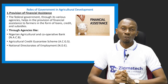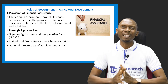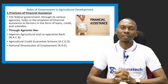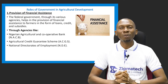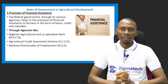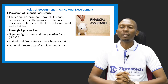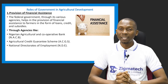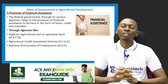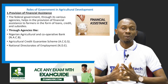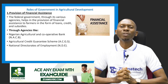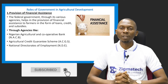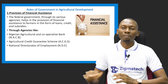The first role we'll look at is the provision of finance or financial assistance. The government helps or provides financial assistance to farmers — it's one of the ways by which the government helps in agricultural development. This could be in the form of loans, credits and subsidies, and it's done through certain agencies like the Nigerian Agricultural and Cooperative Bank (NACB), the Agricultural Credit Guarantee Scheme, and the National Directorate of Employment (NDE).